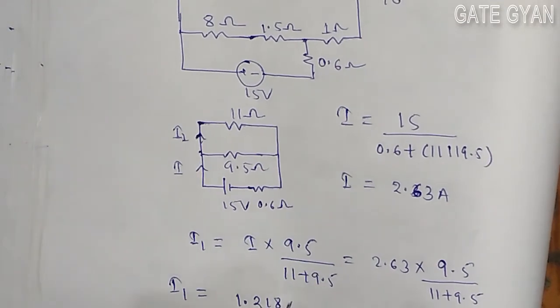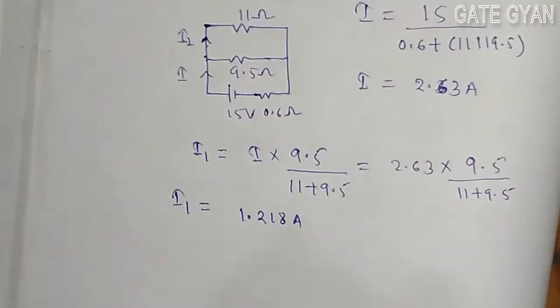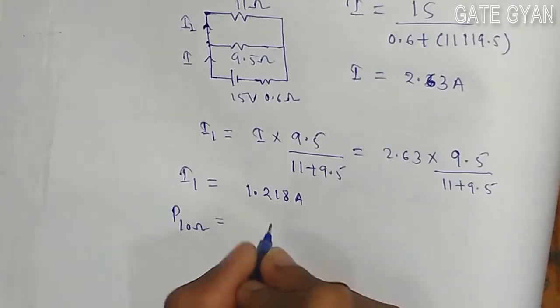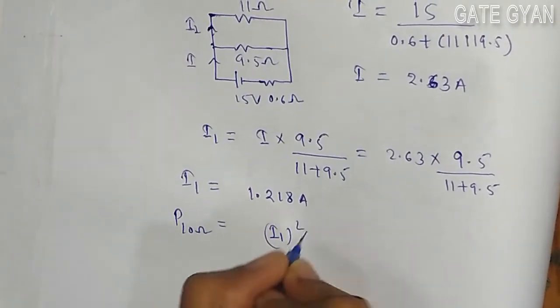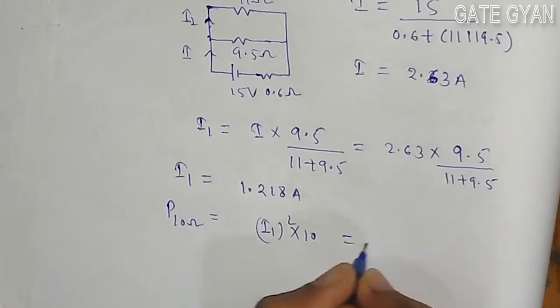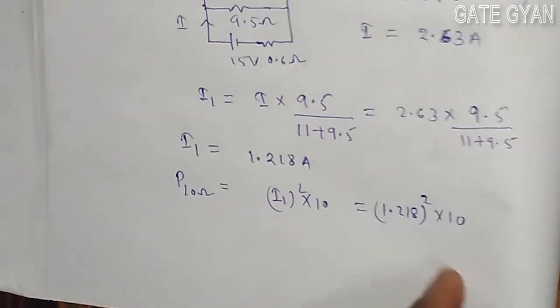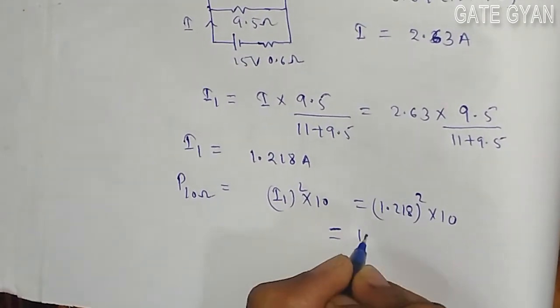Which equals 1.218 ampere. Now to get the power loss across 10 ohm, it is going to be I_1 squared into 10. So it is going to be 1.218 square into 10, and this is going to be equal to 14.83.